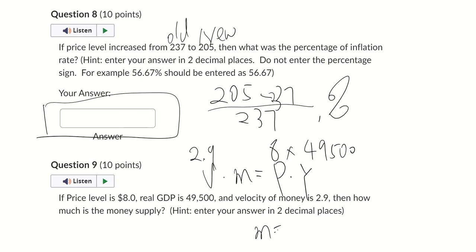So we have therefore your money supply just equals 8 times 49,500 divided by 2.9. And whatever the answer is, that's going to be your money supply.